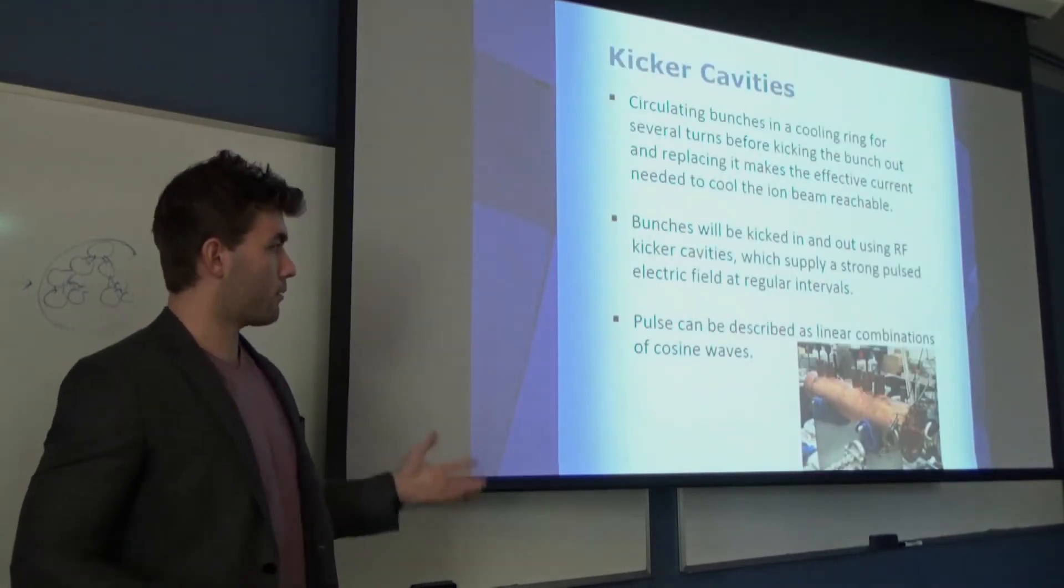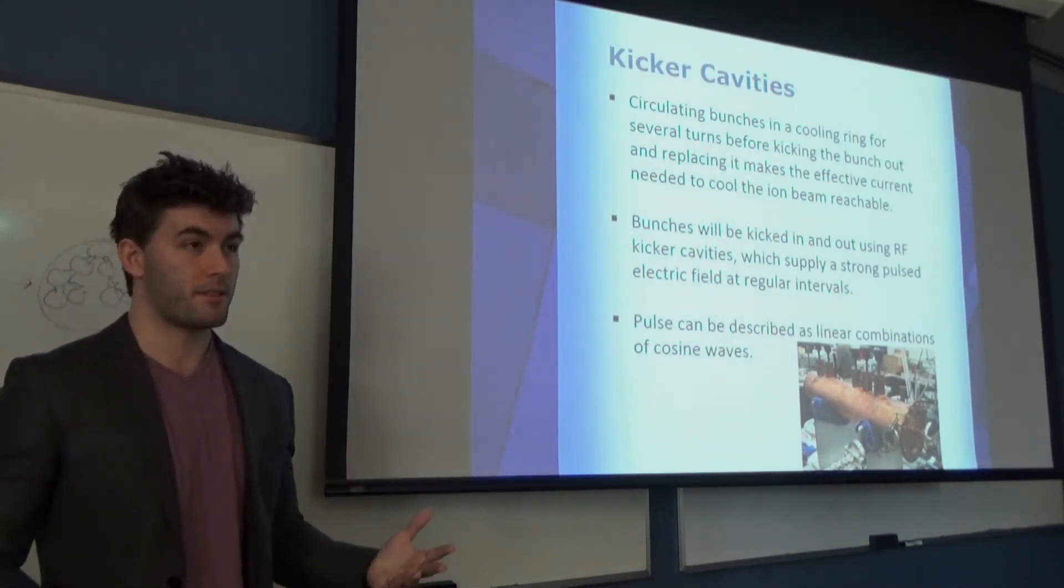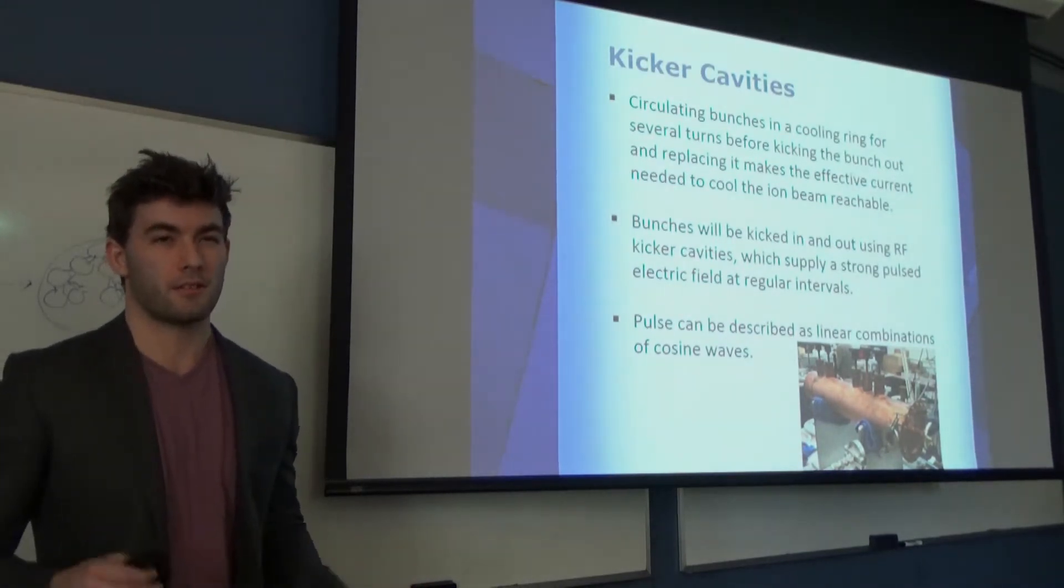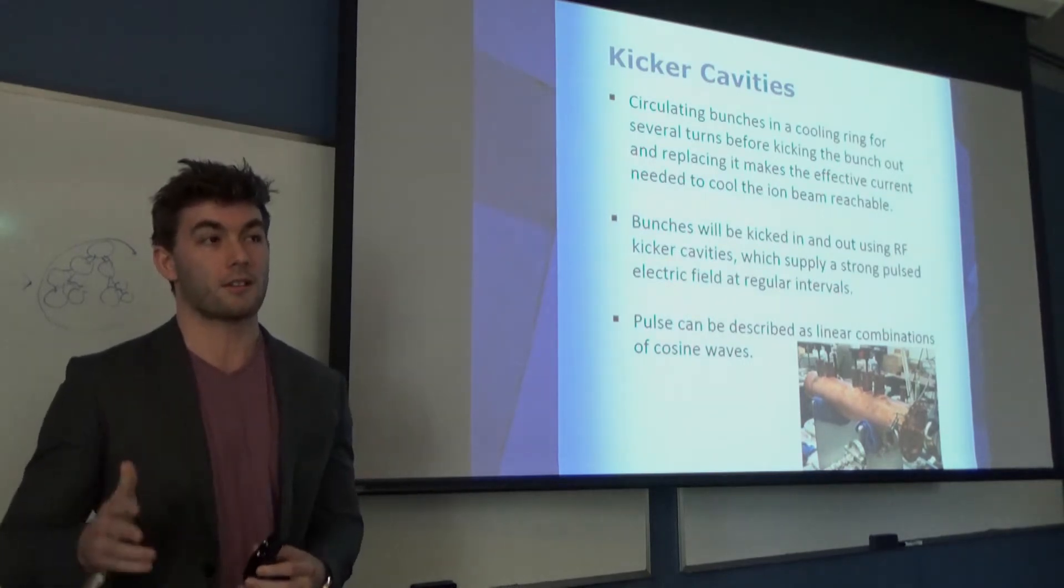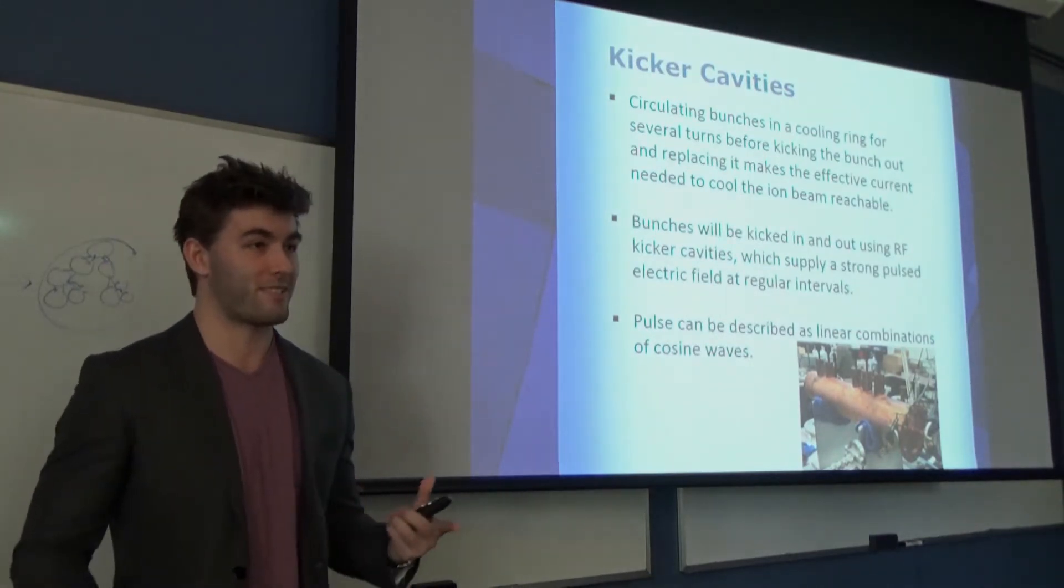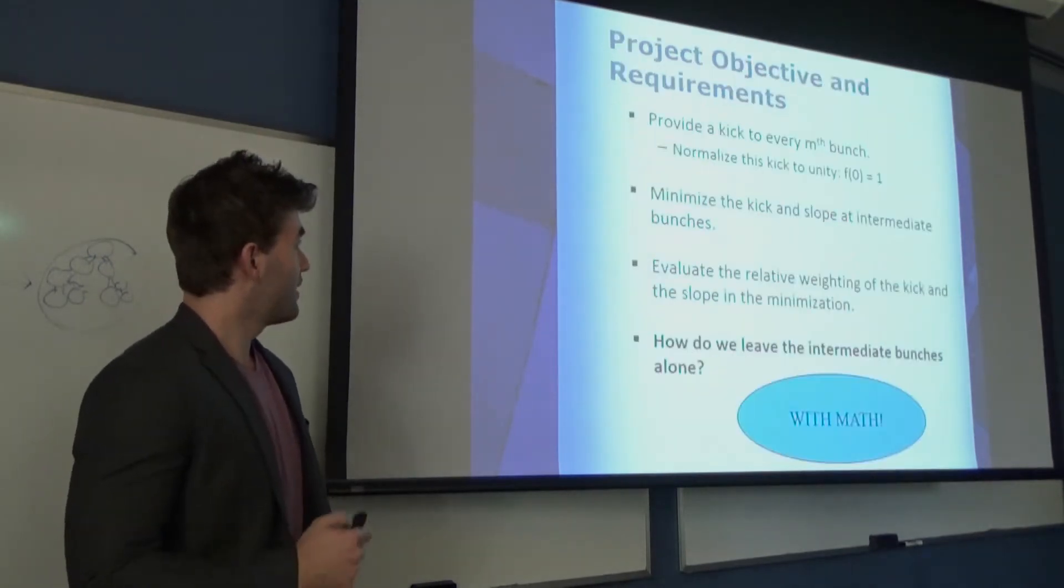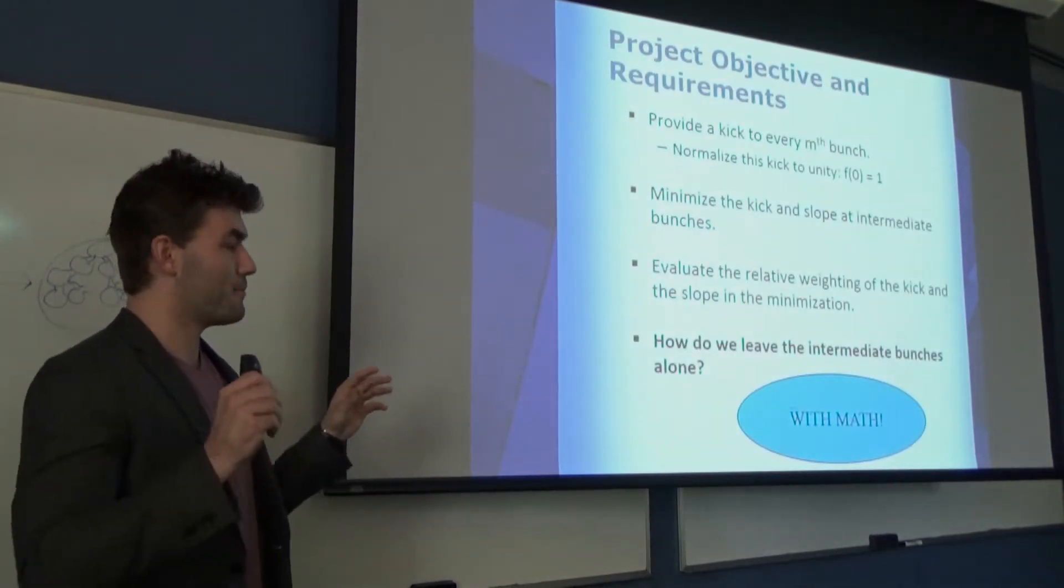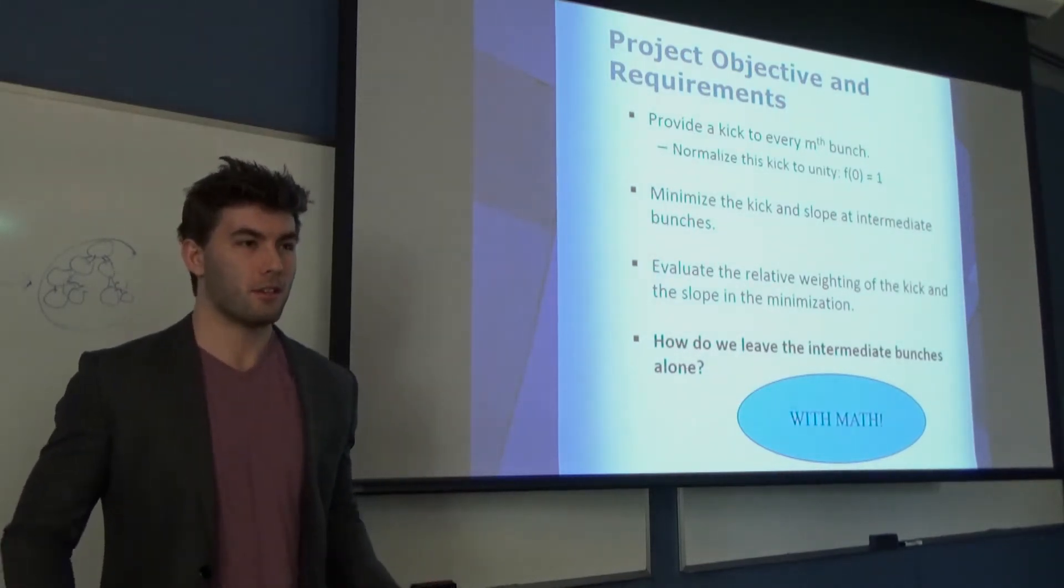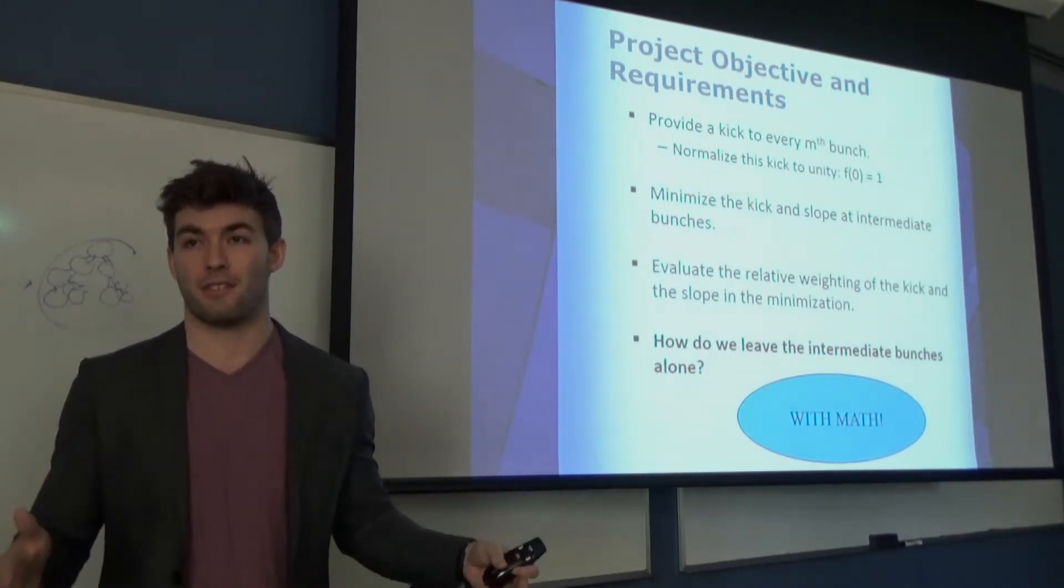If we want to cycle the cooling ring 11 times before kicking electron bunches, now we need a way of kicking them out. And the way to do that is through RF kicker cavities, which supply a very strong pulsed electric field at regular intervals. Anytime you see reference to pulses or intervals or something that's periodic, that's screaming sines and cosines.